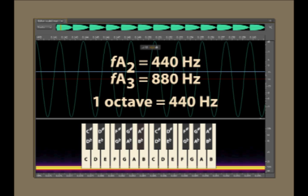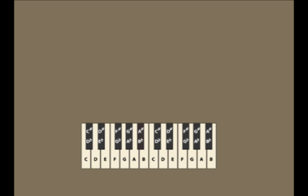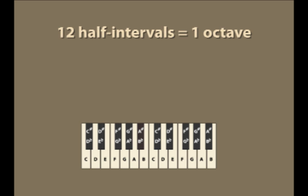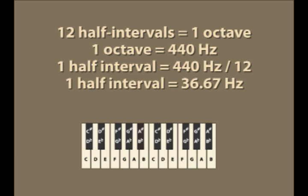An octave spans a frequency range of 440 Hz. Each note on the piano corresponds to a half interval, and there are 12 half intervals in an octave. Each half interval corresponds to a change of frequency of 440 Hz divided by 12. This is a change of 36 and 2 thirds Hz for each interval.